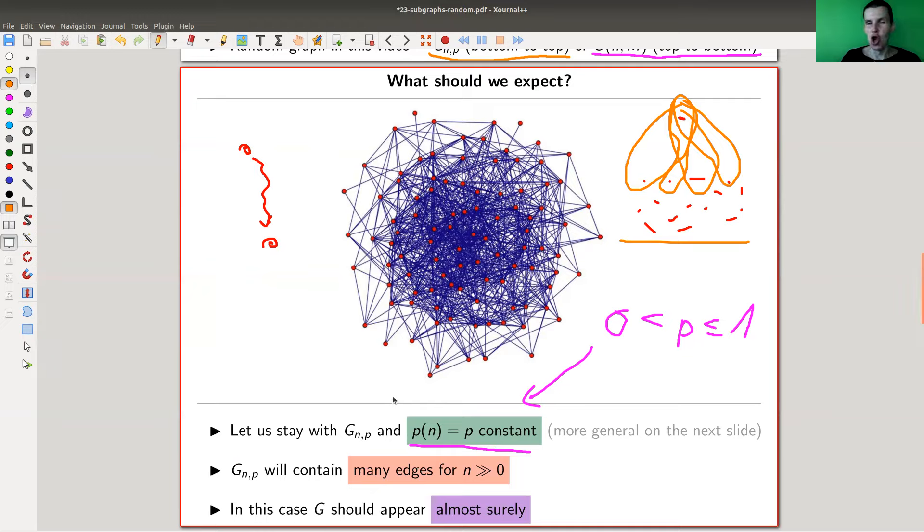That's the point why those random graphs usually tend to have a lot of edges. This one is a random graph where p was 0.1, and there are not so many vertices, but as you can already see they have a lot of edges already. So those random graphs contain a lot of edges.